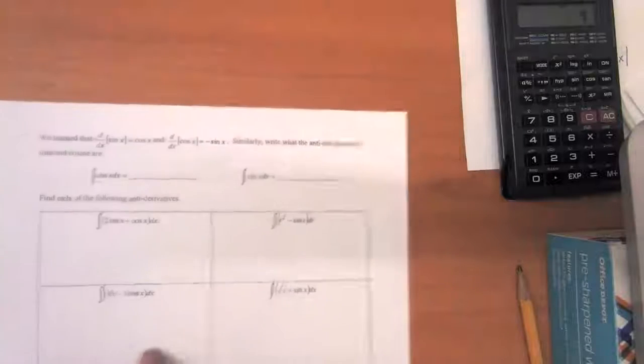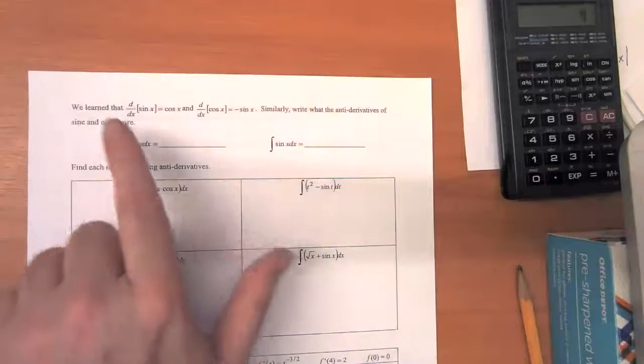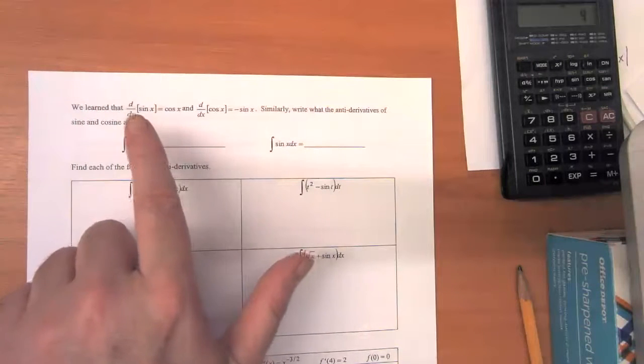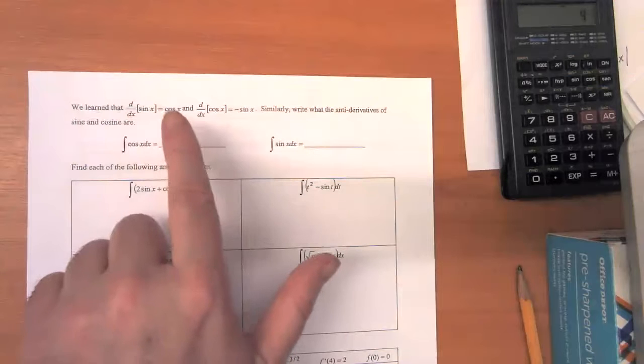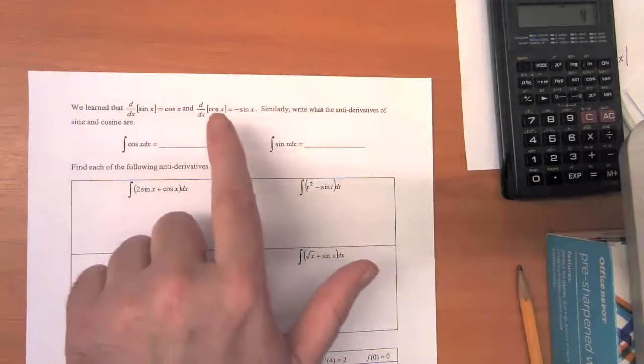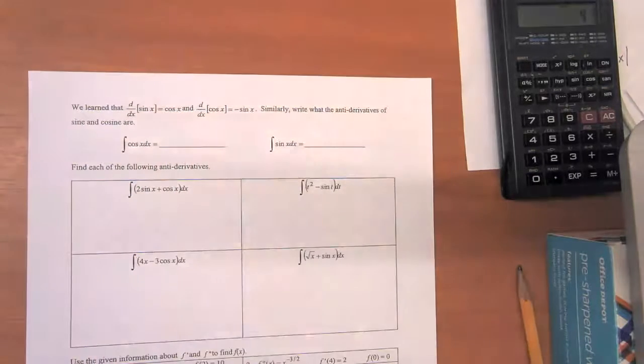So here on page 488, it says we learned that the derivative of sine of x with respect to x is equal to cosine x, and the derivative with respect to x of cosine x equals negative sine of x.